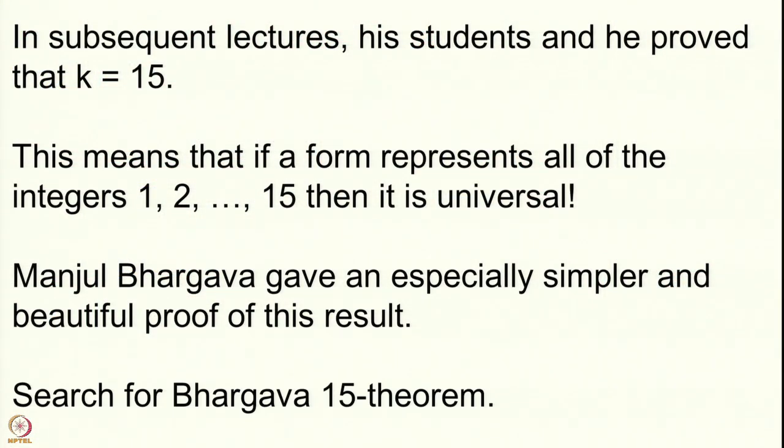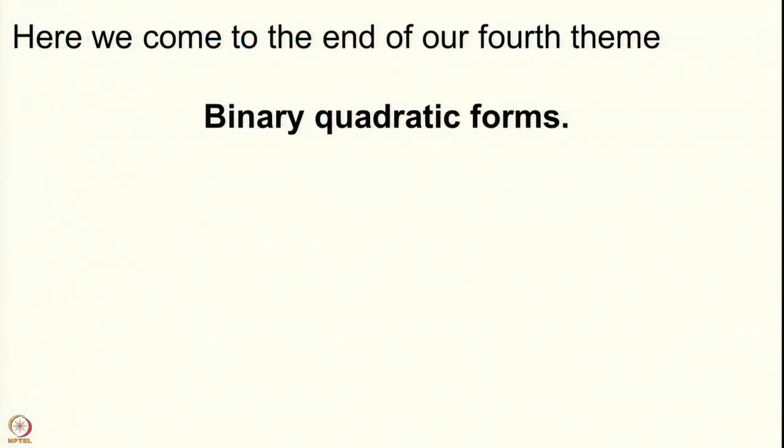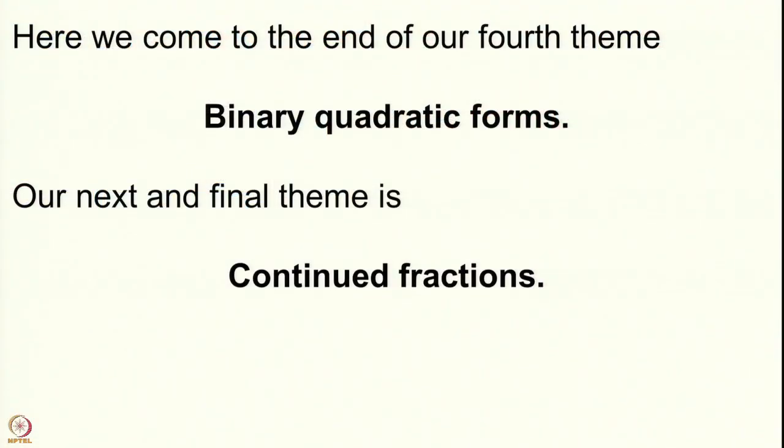If you want to read more on this, search for 'Bhargava 15 theorem.' For the generalized forms with cross terms like x₁x₂, the corresponding number is 290: if a positive definite form represents everything up to 290, then it is universal. This is the third direction by which we can generalize Lagrange's theorem, and we have a very satisfactory answer, along with an important contribution from Indian-origin mathematician Manjul Bhargava. This brings us to the end of our fourth theme on binary quadratic forms.